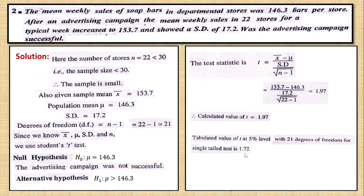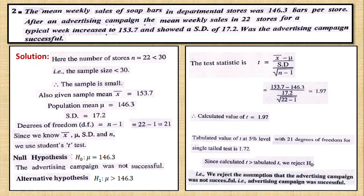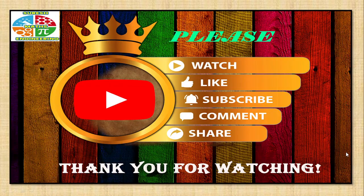The table value at the appropriate significance level is 1.05. Since the calculated t-value 1.97 is greater than the table value, we reject H₀. Therefore, we reject the assumption that the advertising campaign was not successful — meaning the campaign was indeed successful. Thank you.